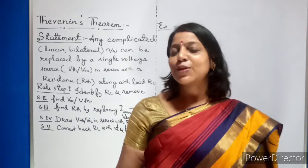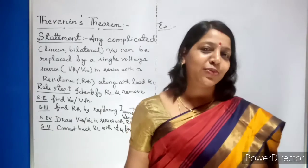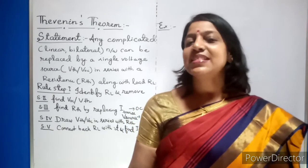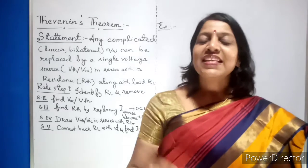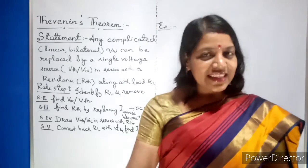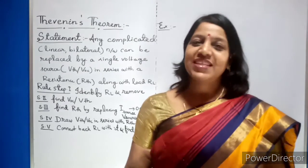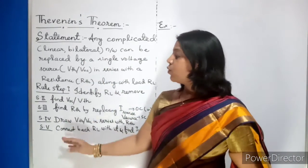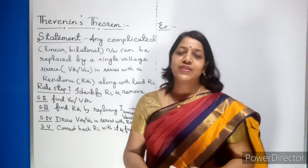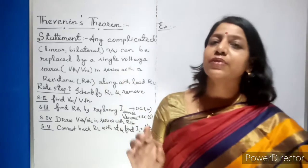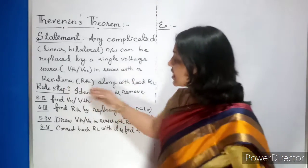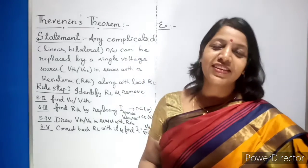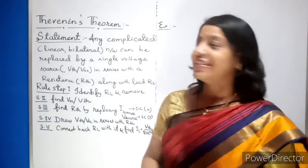Any complicated network can be replaced by a simple network consisting of a single voltage source in series with a resistor. There are five steps to follow, and I will show you using an example. As I explain the steps, I will solve it simultaneously so it is easy for you to get clarity.